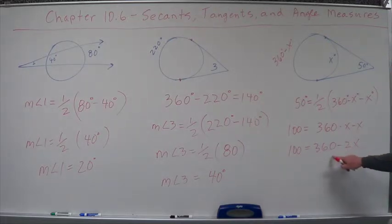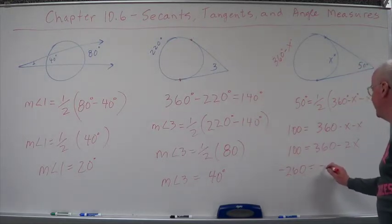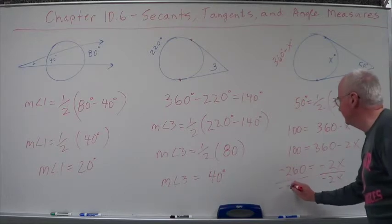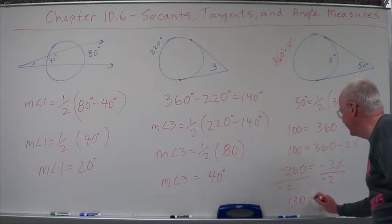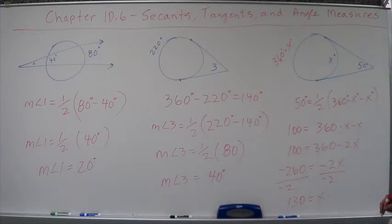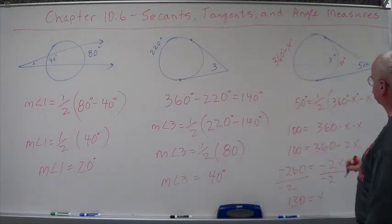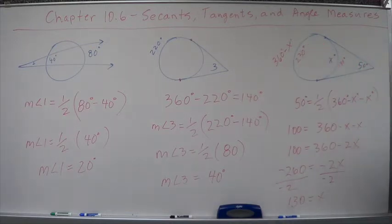Let's pull this over here. That gives us a negative 260 equals negative 2x. Well, we obviously are going to divide by negative 2, and not 2x, but negative 2. And when we do, we get 130 equals x. So this is 130 over here, and this one over here would be 230. So all we're doing is playing that equation backwards, manipulating that equation with the rules of algebra.